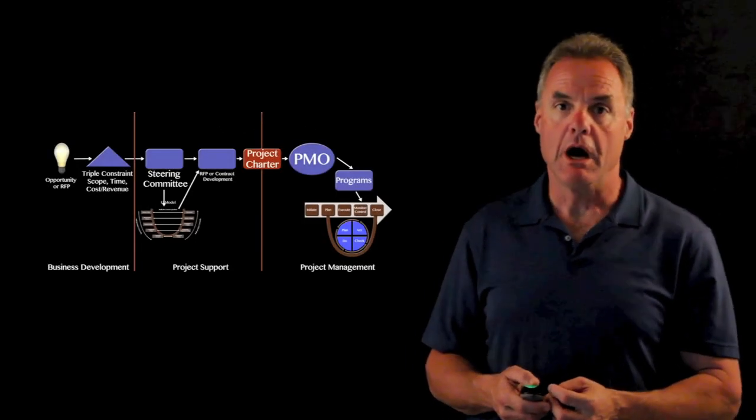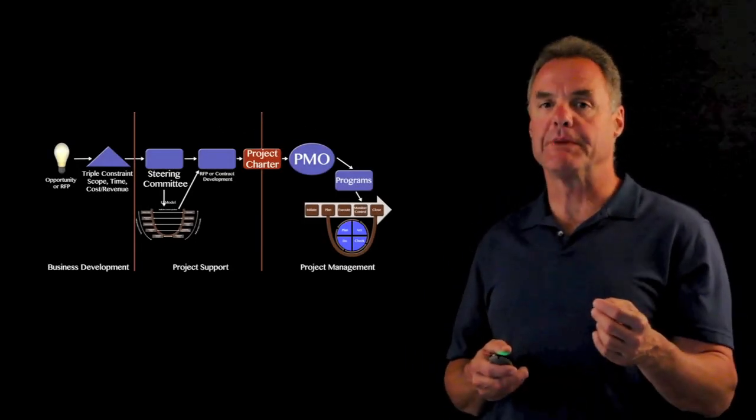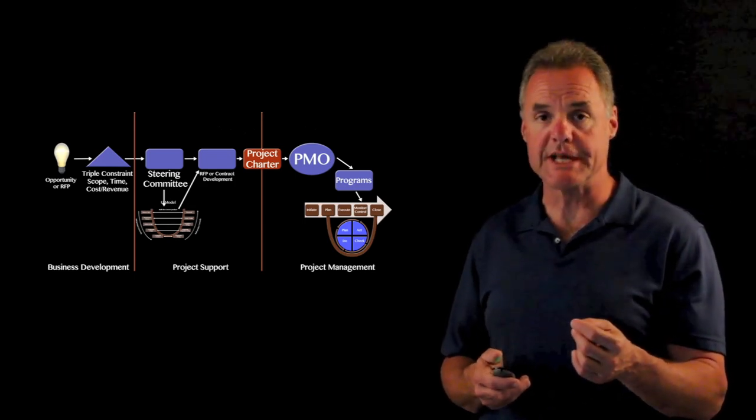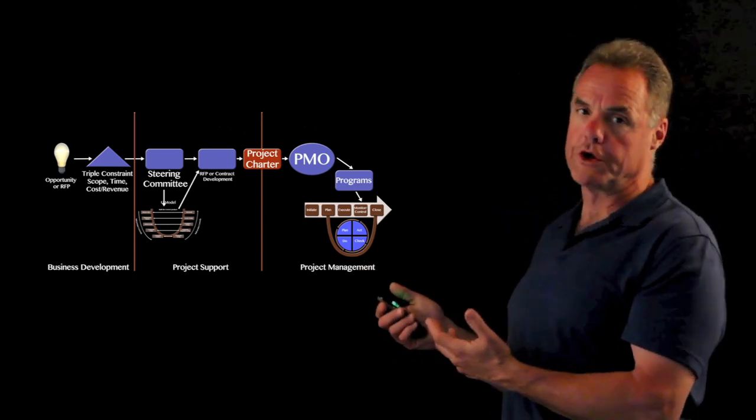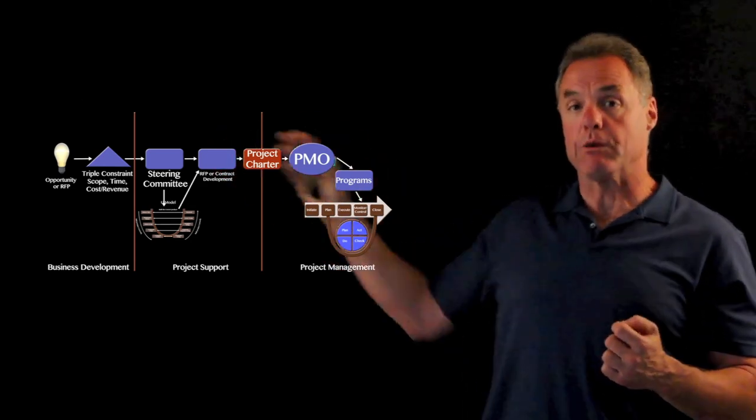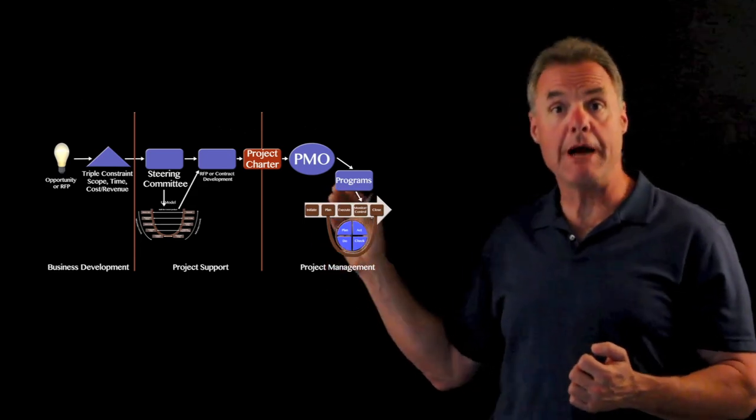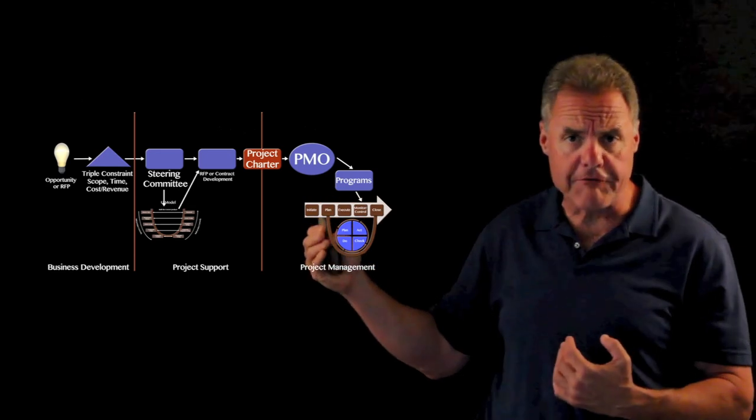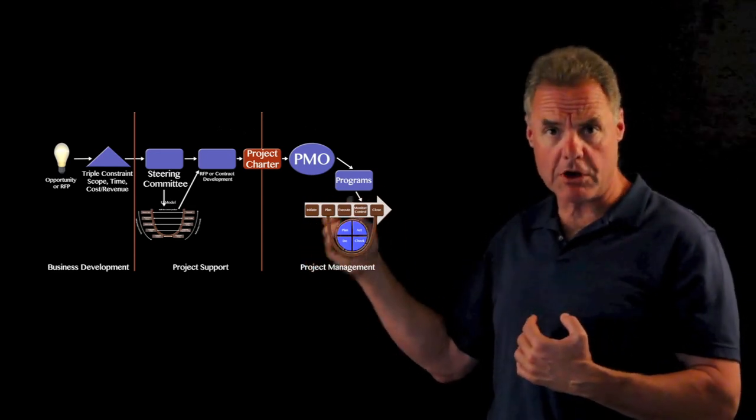And secret number four is you have to visualize a true methodology from how that project becomes or that idea becomes an actual project in an organization. And I've developed one for you as you see here. So an idea comes into the organization. It runs through the triple constraint of scope, time, and cost. You get a level of about 25% to 35% confidence in the scope, time, and cost.